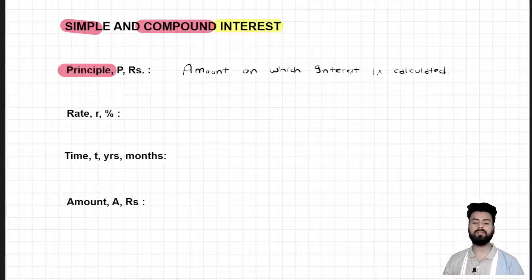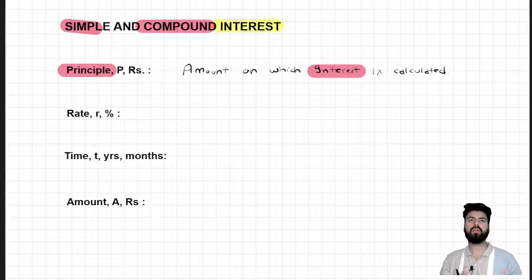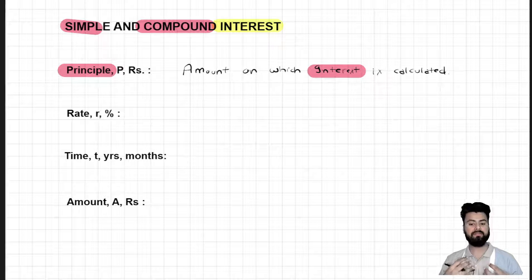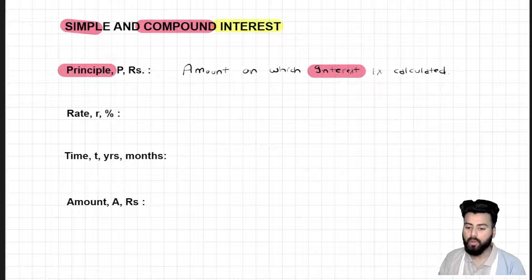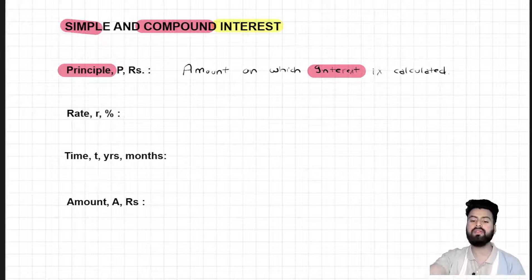Let's say I have borrowed some money from the bank. Since I am using their money, I have to pay them interest. Or you can also understand interest as: I have lent my money to the bank. Since I have given my money to the bank, the bank has agreed to give me some interest. So interest is the amount of money which is either payable to me or which I have to pay to someone else.